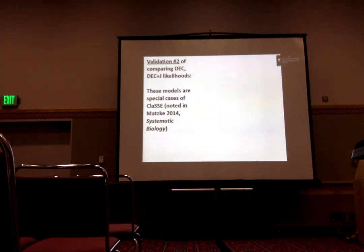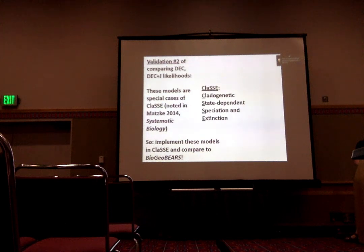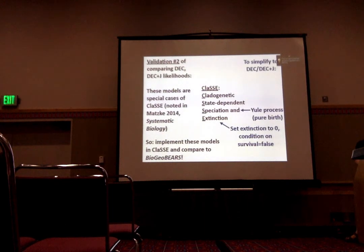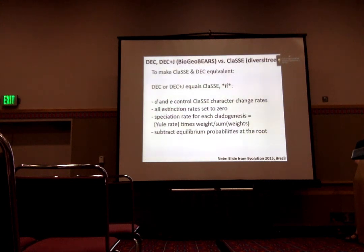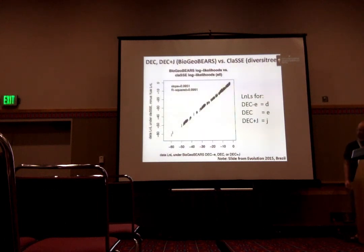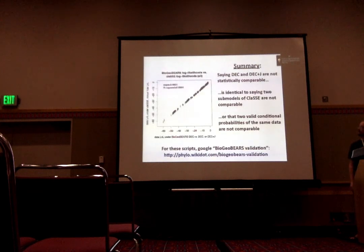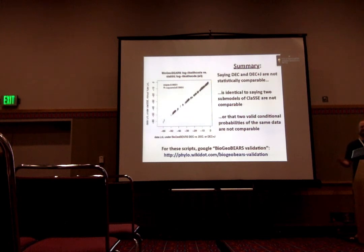One other thing worth noting is that these models are special cases of the CLASSE model — phylogenetic state-dependent speciation-extinction. If we set extinction to zero, set speciation to be a cladogenetic process, and divide that speciation process by the different kinds of cladogenetic events, then these models are equivalent. We can calculate likelihoods under both BioGeoBEARS models and CLASSE models and they very strongly correlate. So comparing these two models is possible, and saying you can't compare them is like saying you can't compare two sub-models of CLASSE, or that it's not valid to compare two conditional probabilities — which is how we measure how well models fit the data.